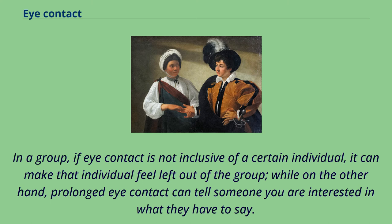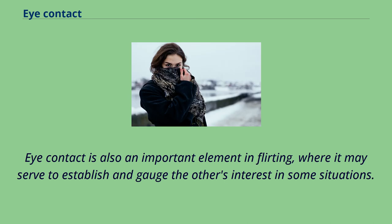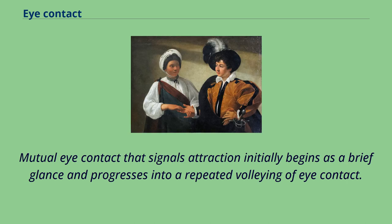In a group, if eye contact is not inclusive of a certain individual, it can make that individual feel left out of the group, while prolonged eye contact can tell someone you are interested in what they have to say. Eye contact is also an important element in flirting, where it may serve to establish and gauge the other's interest. Mutual eye contact that signals attraction initially begins as a brief glance and progresses into a repeated volleying of eye contact.